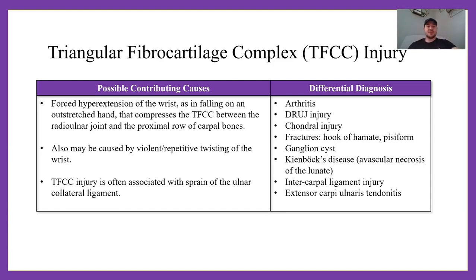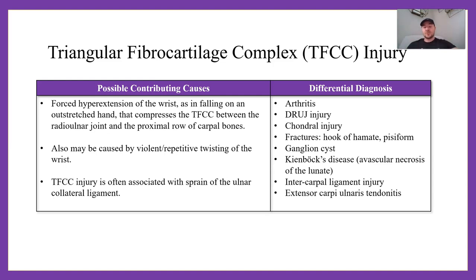The TFCC injury is often associated with sprain of the ulnar collateral ligament of the wrist. For differential diagnosis, think arthritis, distal radial ulnar joint injury, chondral injury, fractures such as hook of hamate or pisiform fractures, ganglion cyst, Kienböck's disease — which is avascular necrosis of the lunate — intercarpal ligament injury, and extensor carpi ulnaris tendonitis.